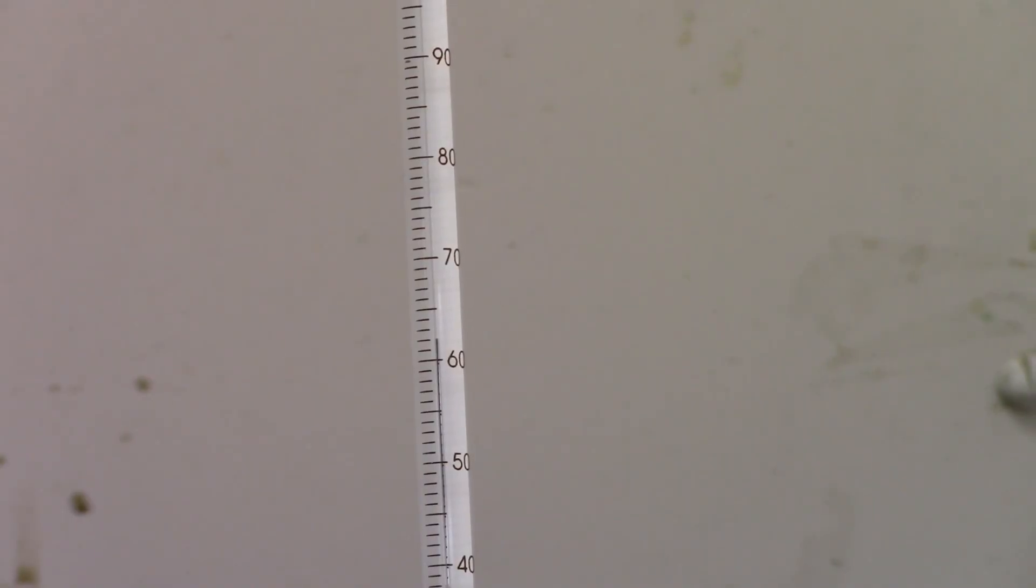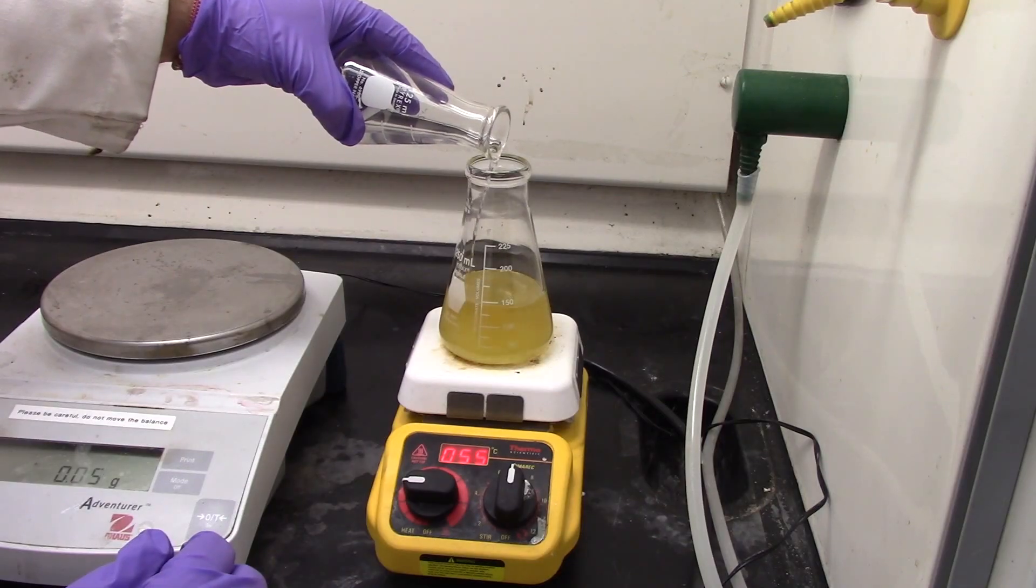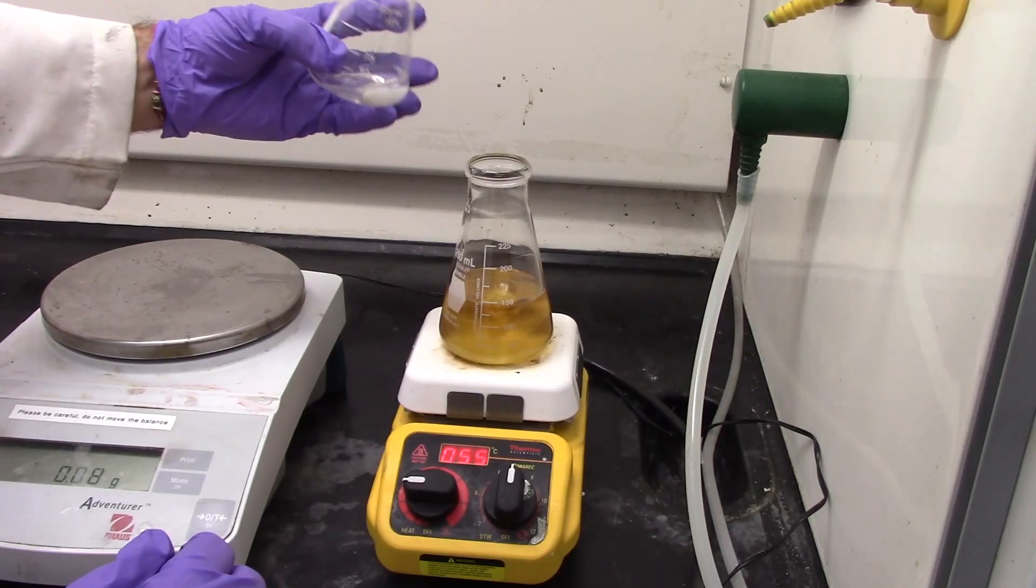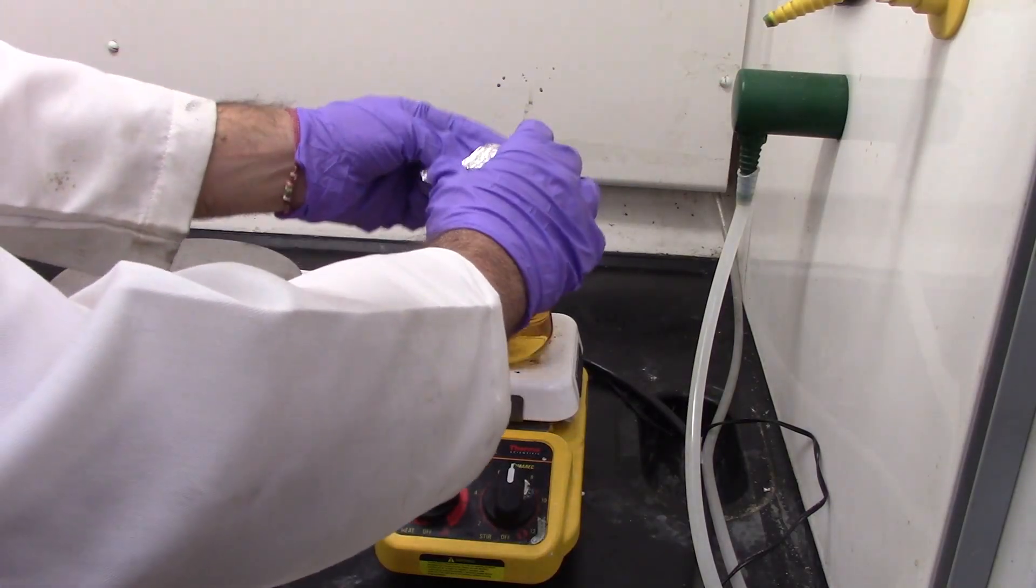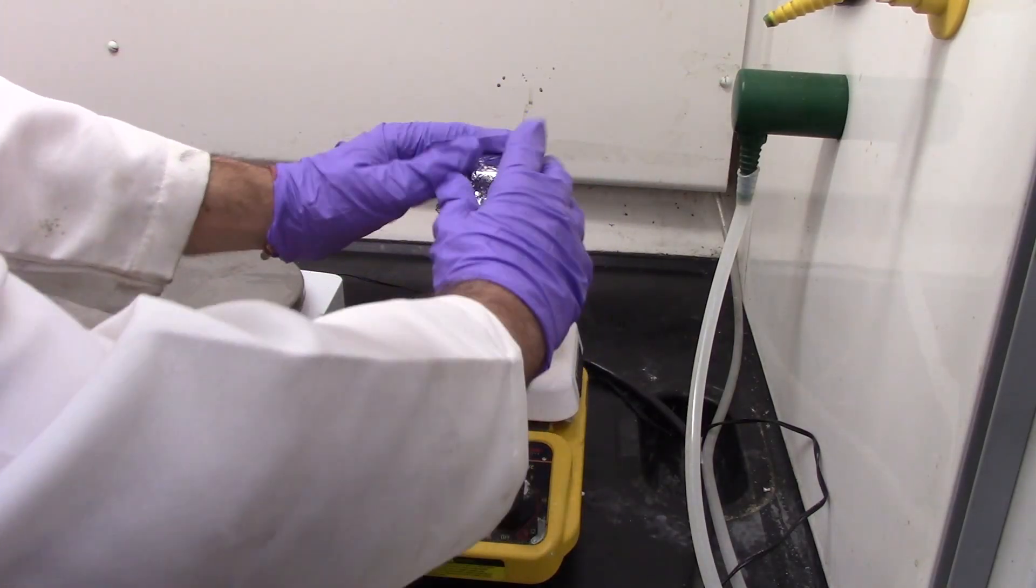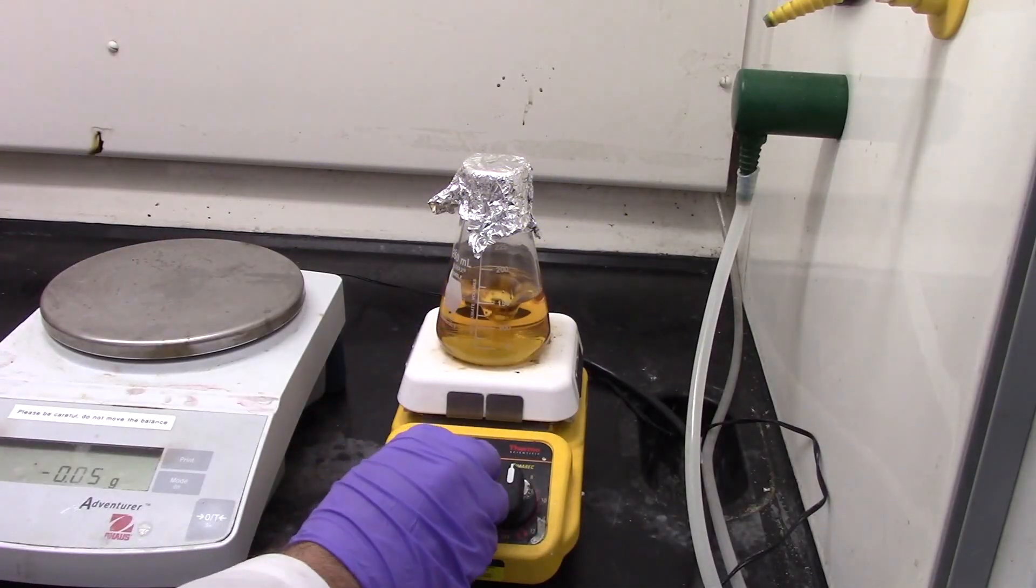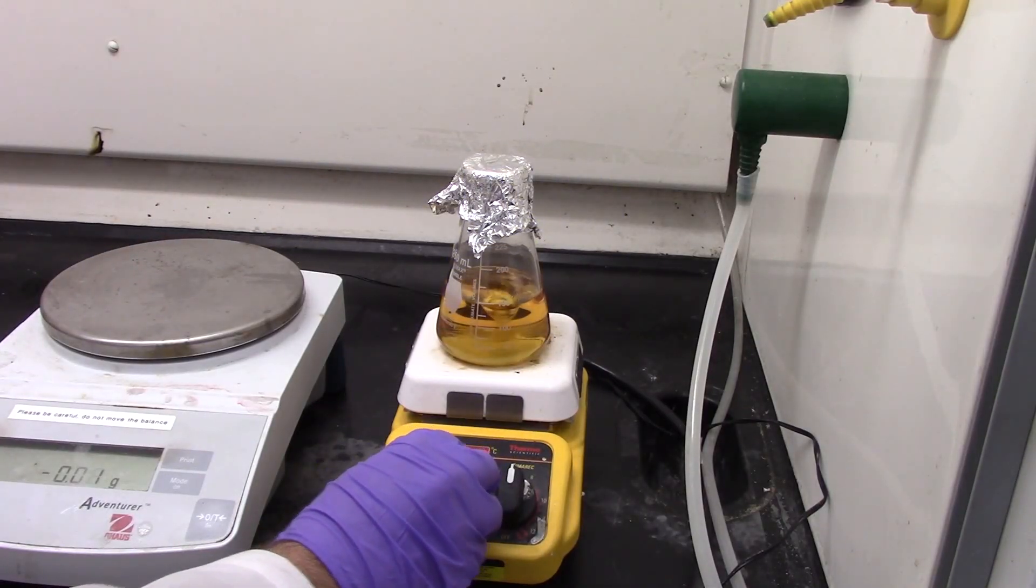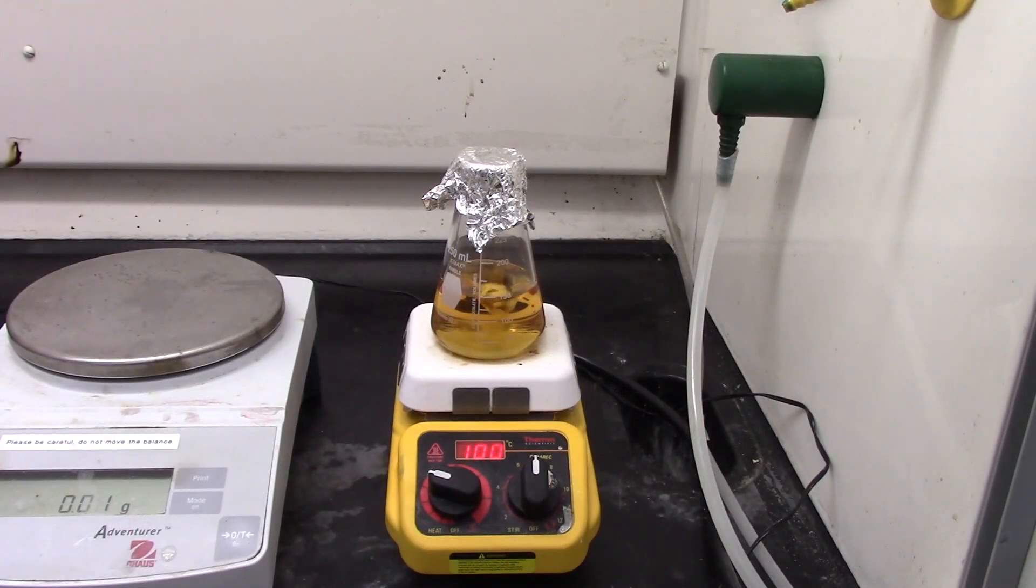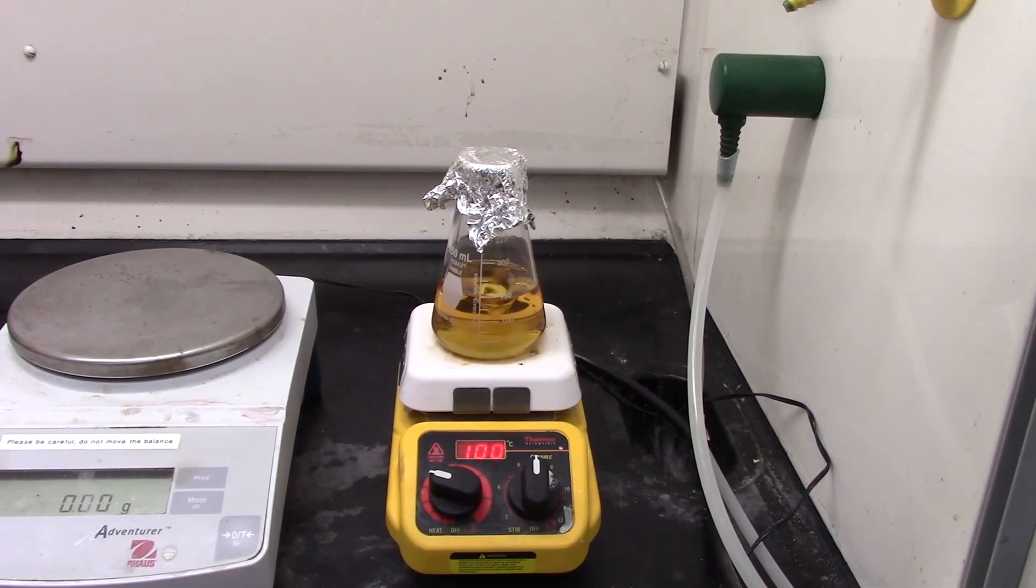Once 60 degrees Celsius is reached, add the alcohol catalyst mixture to the oil in the flask and cover with a watch glass or aluminum foil to keep the alcohol vapors from escaping. Stir this mixture at a moderate level for 60 minutes, while holding the temperature at 60 degrees Celsius.